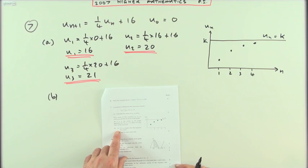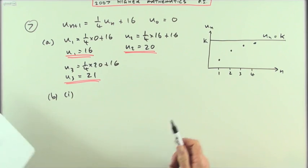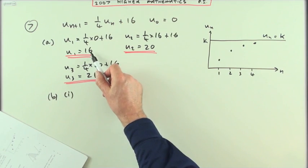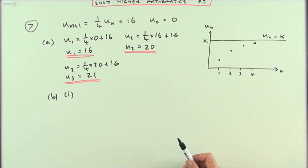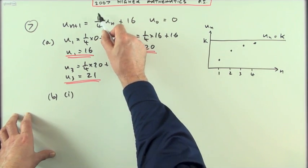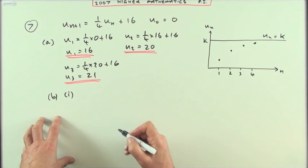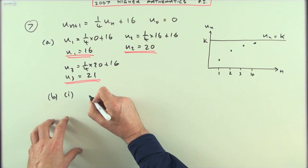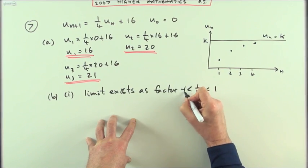Part B(i): give a reason why this sequence has a limit. You can see it's got a limit from the graph and because the differences are getting smaller - difference of 4, then 1, getting smaller. The reason you're meant to state is that the multiplying factor, one quarter, is a proper fraction between 1 and negative 1. So limit exists as the factor, a quarter, is less than 1 and greater than negative 1.